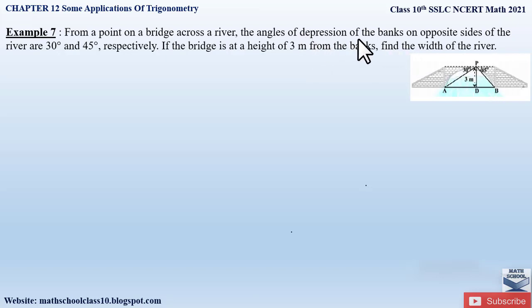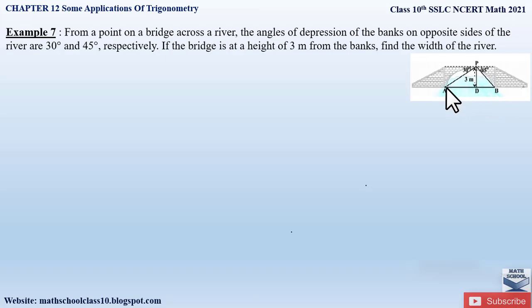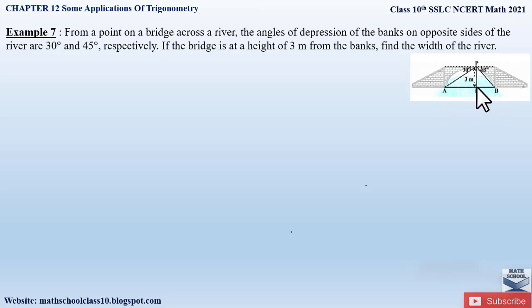Here the angle of depression is coming into picture. If you look at the figure given in the textbook, you can observe that this is a bridge and you are standing at a point P. There is a river flowing under the bridge. You will be looking from point P at both ends of the bridge. When you look at one end, that is the line of sight AP, and there is a horizontal drawn from point P, so the angle formed between the horizontal and the line of sight is 30 degrees. Similarly on the other side, the horizontal and line of sight make a 45 degree angle. The height of the bridge is 3 meters, and we have to find the width of the river, that is AB.